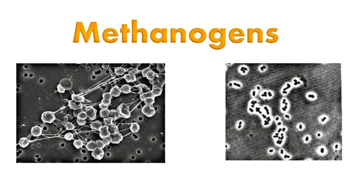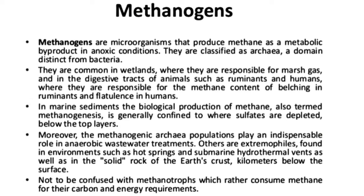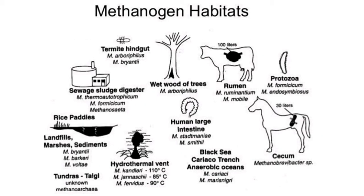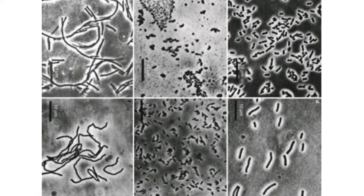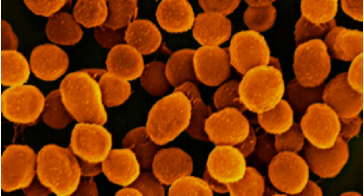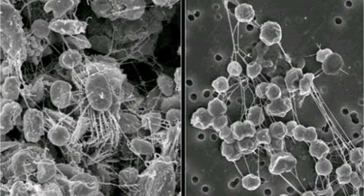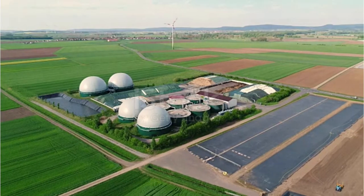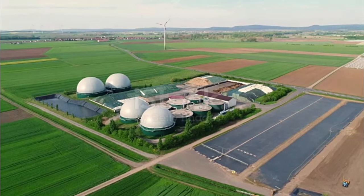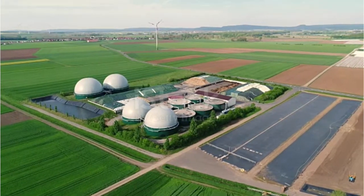Methanogens are the Archeons that produce methane as a metabolic byproduct in anoxic conditions. They are commonly found in wetlands and the digestive tracts of animals such as ruminants and humans. They are responsible for the methane content of belching in ruminants. Methanogens are the largest group of Archaea and are strict anaerobics. They form methane from carbon dioxide and other compounds like methanol, formate, and acetate.